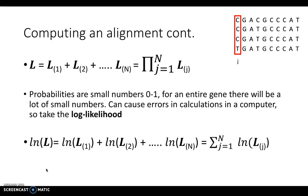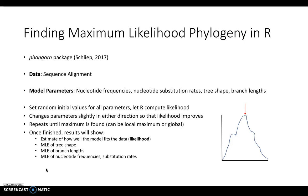Since most of these calculations require a computer program to calculate, we can use the program R with a package called Fangorn. The Fangorn package was released in November 2017 and can be used to calculate the maximum likelihood estimation for phylogenetic sequence data. Using Fangorn, we can run an MLE on a sequence alignment fairly easily. All you need is your data as a sequence alignment, along with model parameters: nucleotide frequencies, nucleotide substitution rates, tree shape, and branch lengths. You set random initial values for all parameters, then let R compute the likelihood, after which R will slightly adjust the parameters in the direction that improves the likelihood.